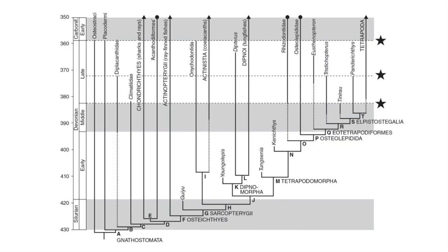Nevertheless, the origin of jaws was a major development as it led to the evolution of all other vertebrates. This large monophyletic group is called the Gnathostomata, which represents all living vertebrates except the primitive jawless fish like hagfish and lampreys, as well as the early Paleozoic Agnatha jawless fish reviewed previously.